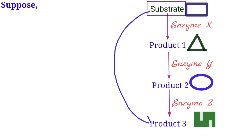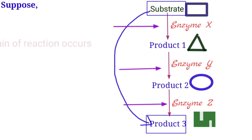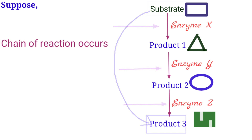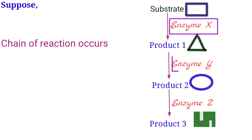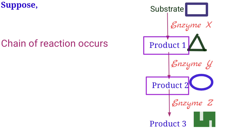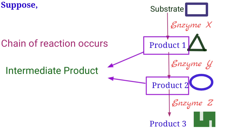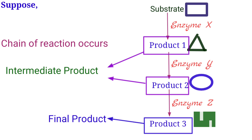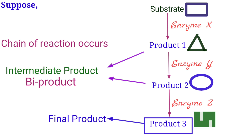From the initial substrate to the final product, there are several series or chains of reactions occurring which require the involvement of different enzymes. The product of each enzyme is known as an intermediate product. The final product is different from the intermediate products, and intermediate products are considered byproducts which can also be used for other purposes.